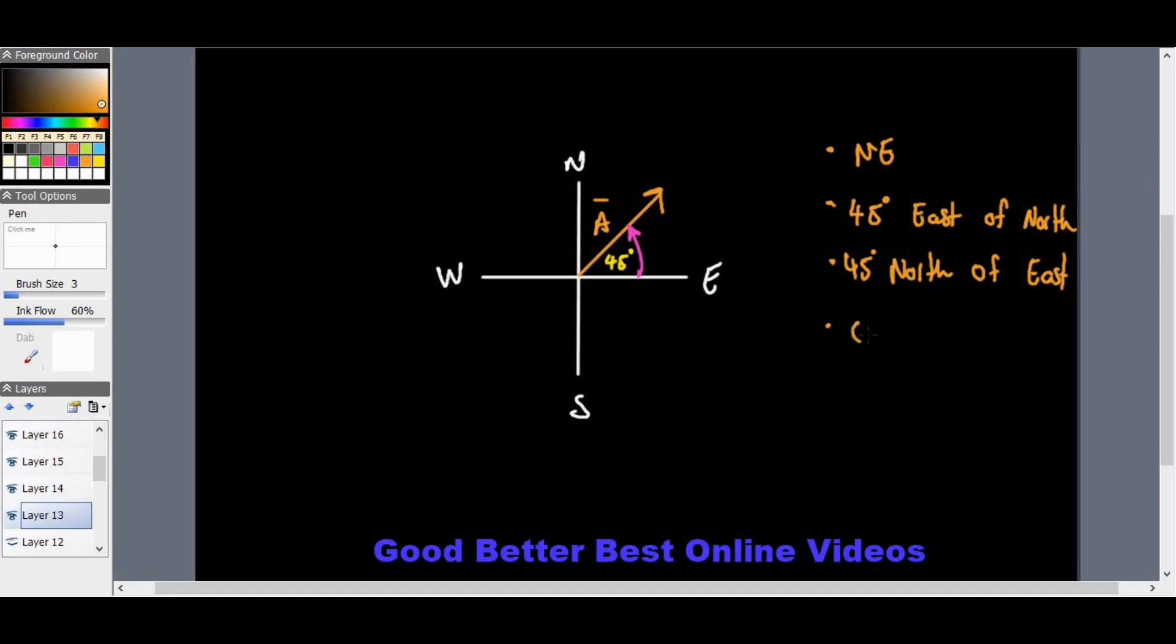This backs up northeast, east of north, and north of east. Another suitable answer is on a bearing of 45 degrees. Another option is 45 degrees from the east axis, though this is the least likely answer. Your top three answers are what you really want to focus on.